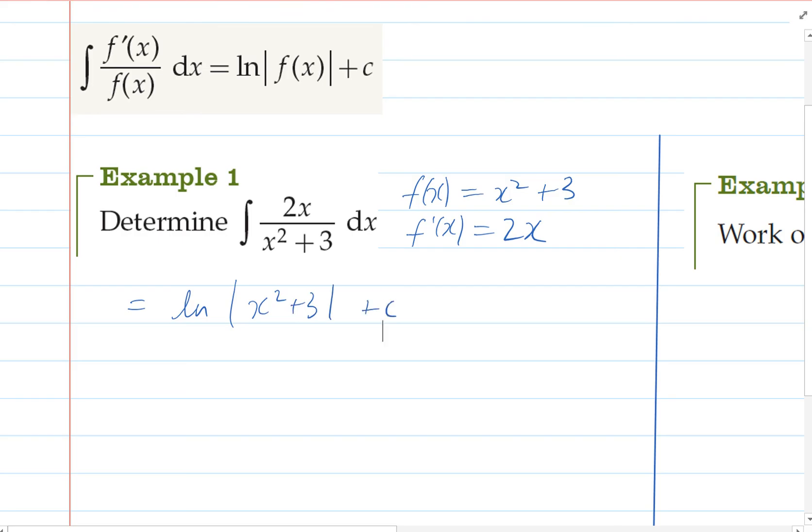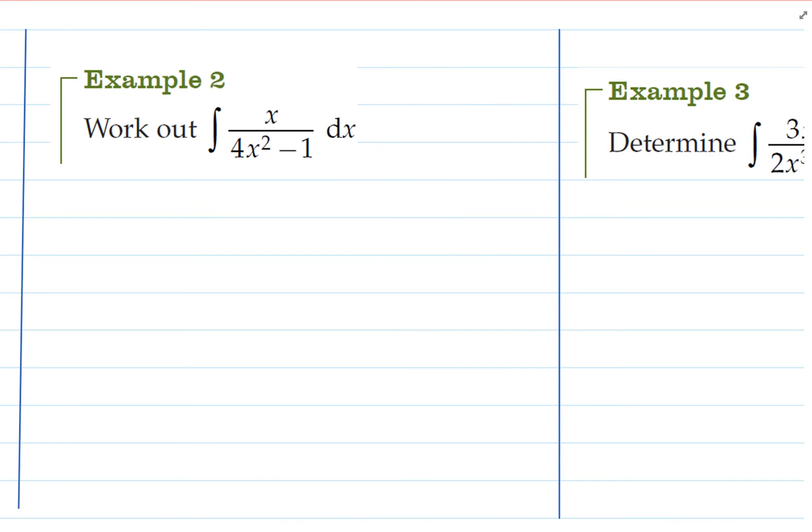In our next example, it's similar but different. So the function of our bottom part of our fraction is 4x squared minus 1, and the derivative of that is 8x. So 8x is not the same as x, but it is a multiple of x.